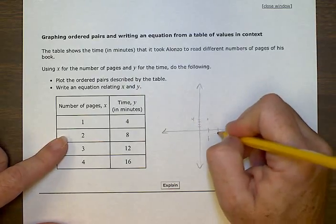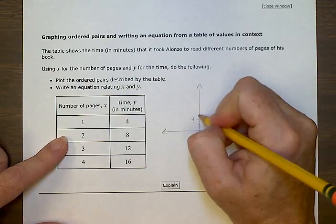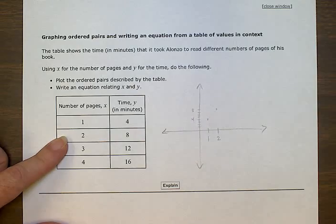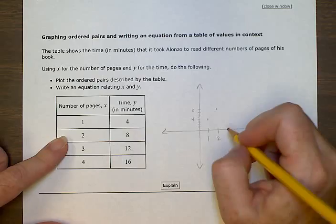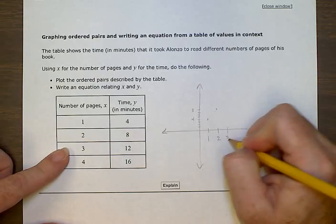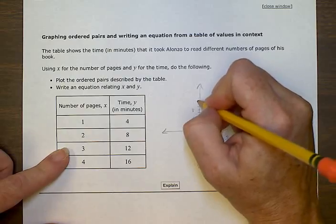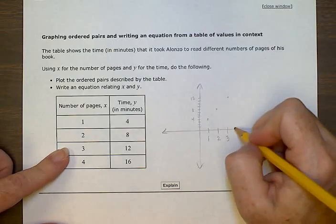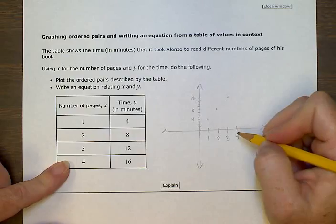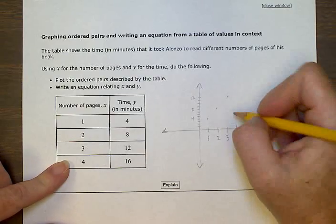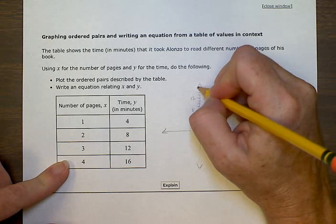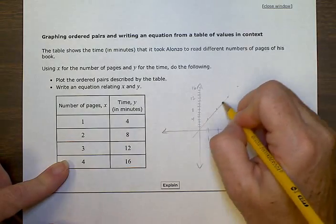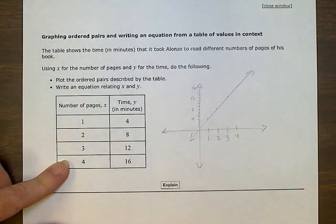My third ordered pair starts with 3 for x and 12 for y. And my last pair starts with a 4 and the y value that goes with it is 16. So I have a graph that looks like that.